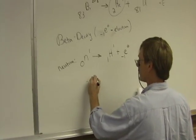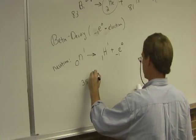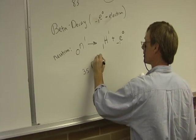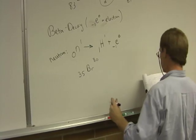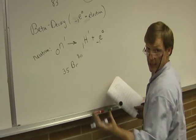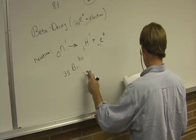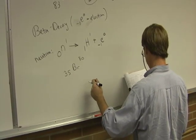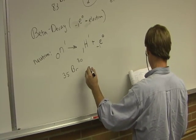So bromine's got 35 protons. And this is bromine 80. That's the nucleus. Oh, the isotope. When you're talking about an isotope, you'll say like bromine 80, because you can already figure out that it's got 35, because you know it's bromine, 35 protons.